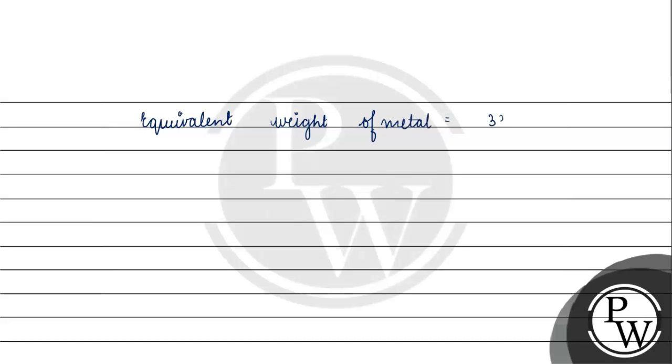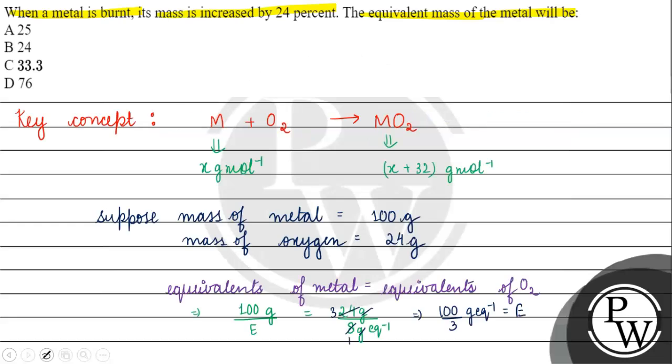So 33.3 grams per equivalent. Coming back to the question, the answer is option C. I hope you understood well, thank you and all the best.